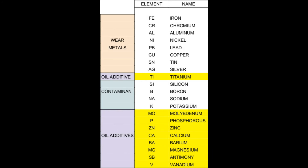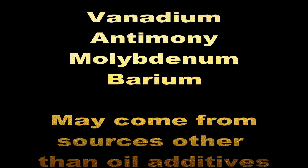The remaining elements in the oil additives section are less commonly present and may also exist from other sources. Elements such as vanadium and antimony can be sourced to catalysts present in rare fuels. Molybdenum, sometimes shortened to moly, may be present either as a friction reducer or as a wear metal present in high-performance piston rings, though more commonly present in high-performance gasoline-powered racing engines. Barium may be present in small amounts as a detergent.